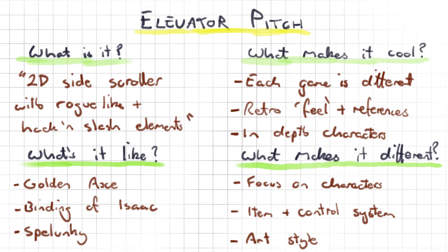The other thing I want to think about is in-depth characters. A lot of roguelike games, because of their nature, don't focus very much on the backstory of the characters — but that's something I'd really like to do, so let's try and make some really lovable heroes and really evil villains. So what's it going to be like? It's going to be like a mashup of Golden Axe, Binding of Isaac, Spelunky, and any games in that genre really. And what makes it different? We're going to focus on the characters, do some interesting things with items and the control system, and stick with a 2D pixel art style — as long as we keep our graphics nice and consistent, it should have a really distinctive poppy art feel.